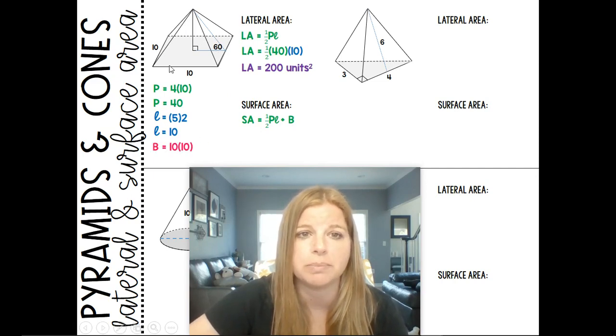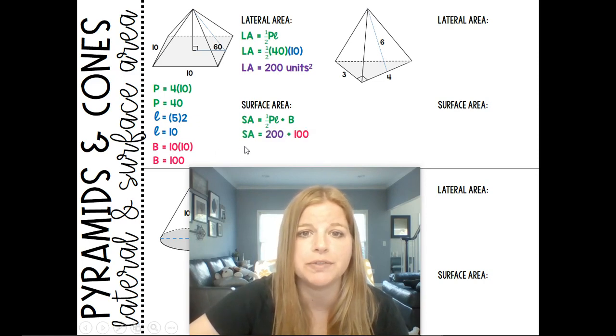Well, the area of the base is just simply 10 by 10, and that would give us 100. And so my surface area is 200 from the lateral area plus 100 from the base, which is 300 units squared.